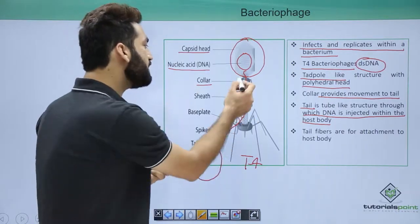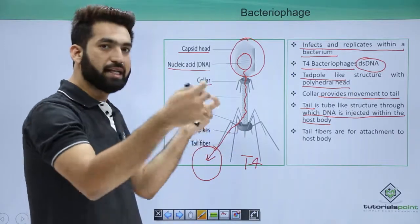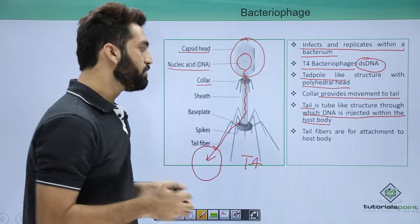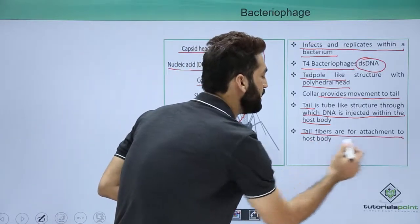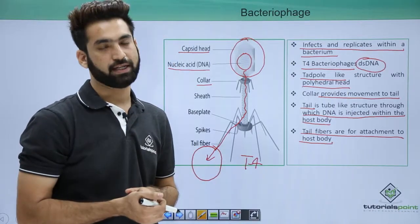The tail has the sheath. From there you have the base plate, and from the base plate there are six tail fibers coming to hold on to the bacteria. So tail fibers are for the attachment to the host body, and the host here is a bacteria.